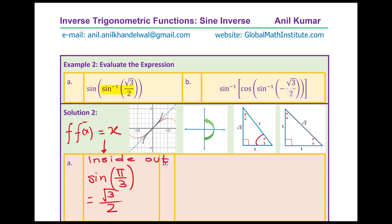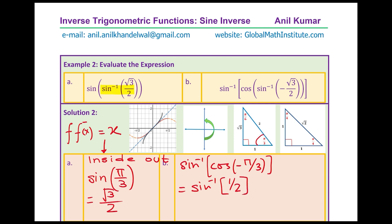For part B, we have incorporated cosine in between, so let's work from inside out. Sine inverse of minus root 3 by 2 gives us minus pi by 3. Now find cosine of minus pi by 3. Cosine is an even function, so cosine of pi by 3 and cosine of minus pi by 3 are exactly the same. Cosine of pi by 3 equals half. So we now need sine inverse of half, which from the special triangle is pi by 6. Therefore the answer is pi by 6.